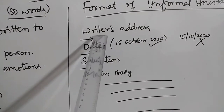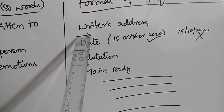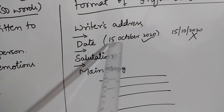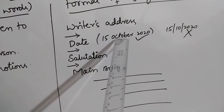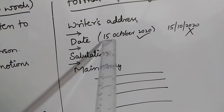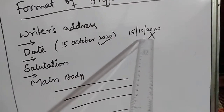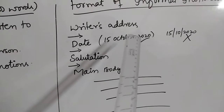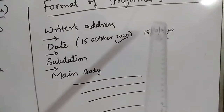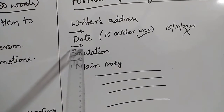After writing the writer's address, leave a space, then write the date. Write the date like this: for example, 15 October 2020. Please don't write it as 15/10/2020. This is the right procedure to write the date. After writing the date, leave a space again.